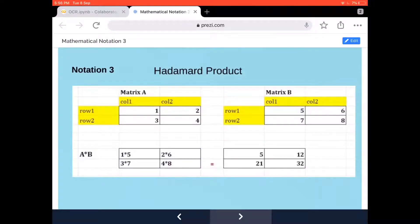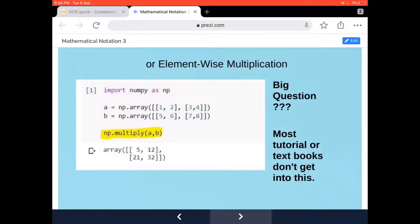How to implement this in Python is very straightforward. You can see the definition of matrices A and B, and if you apply the function np.multiply(A, B), you get the same result.